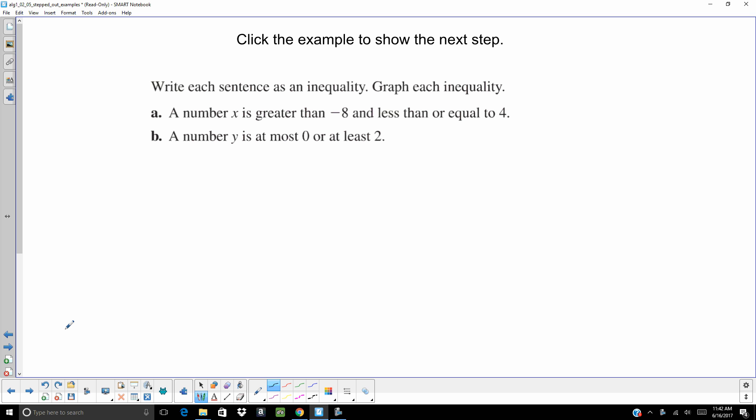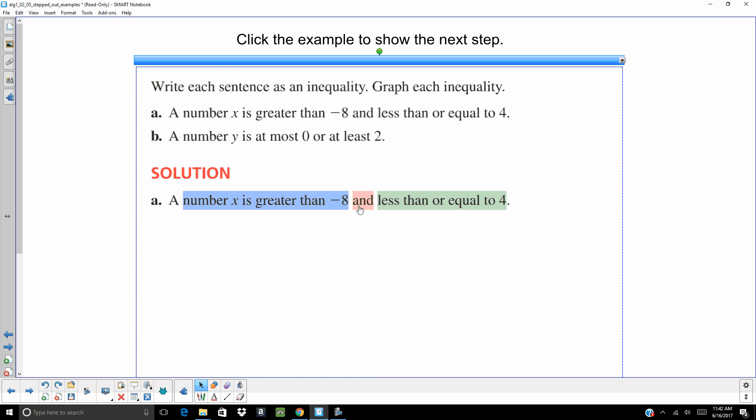So let's take a second and look at our first example. A number x is greater than negative 8 and less than or equal to 4. So we've kind of got two scenarios here. It has to be bigger than negative 8 and smaller than 4. The key word there is and. So a number is greater than and less than. So we've actually got two inequalities there. So what that means is x is in between those two numbers. That's how I always think about it.